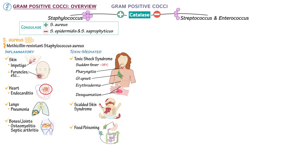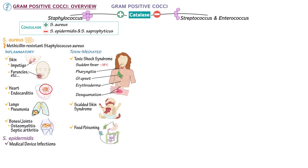Two coagulase-negative species of Staphylococcus are Staphylococcus epidermidis and Staphylococcus saprophyticus. Staphylococcus epidermidis is an important source of medical device infections, particularly in individuals with prosthetic joints and valves or catheters and shunts, and is a significant cause of bacterial sepsis. Staphylococcus saprophyticus is a common cause of urinary tract infections.